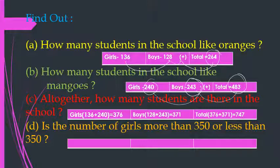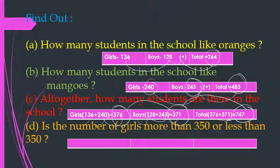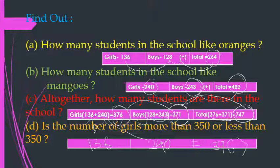Altogether, how many students are there in the school? Girls who like oranges and mangoes are 376, boys who like oranges and mangoes are 371, and when we add 376 girls and 371 boys, we get the total children of the school, that is 747. Is the number of girls more than 350 or less than 350? The number of girls is 376, which is more than 350. So hence we can say that the number of girls are more than 350.